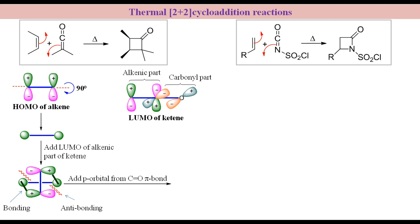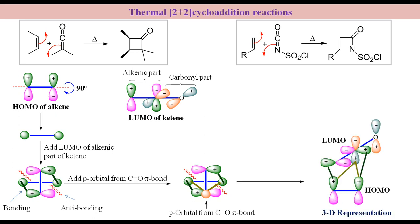Now, put the extra p-orbital from carbonyl pi bond to one end of LUMO at right angle to it so that both orbitals of the HOMO can bond to the bottom part of this extra p-orbital. We can understand this bonding more clearly by three-dimensional representation.